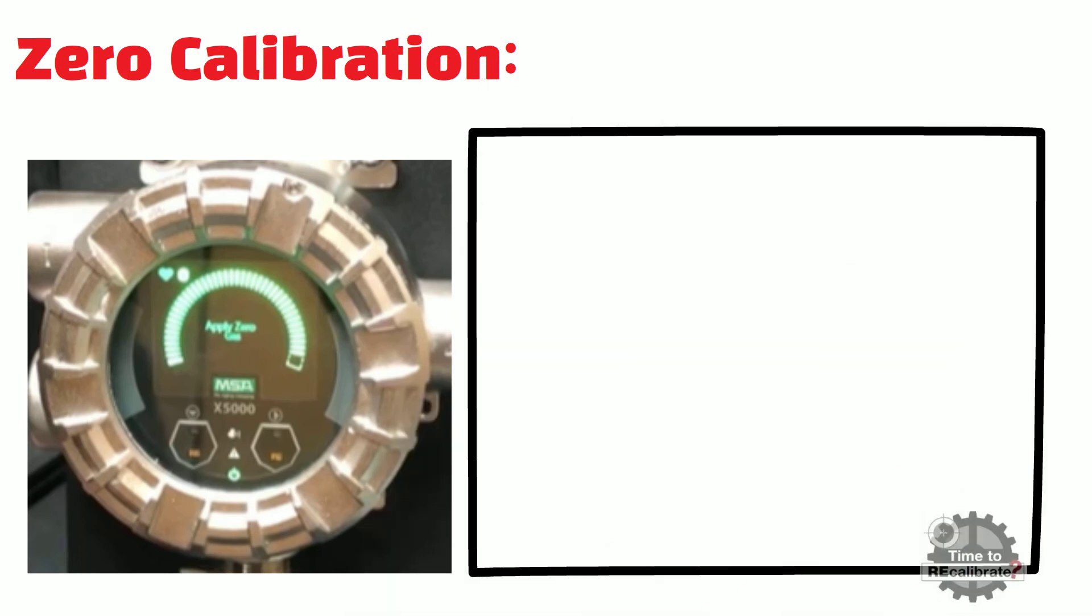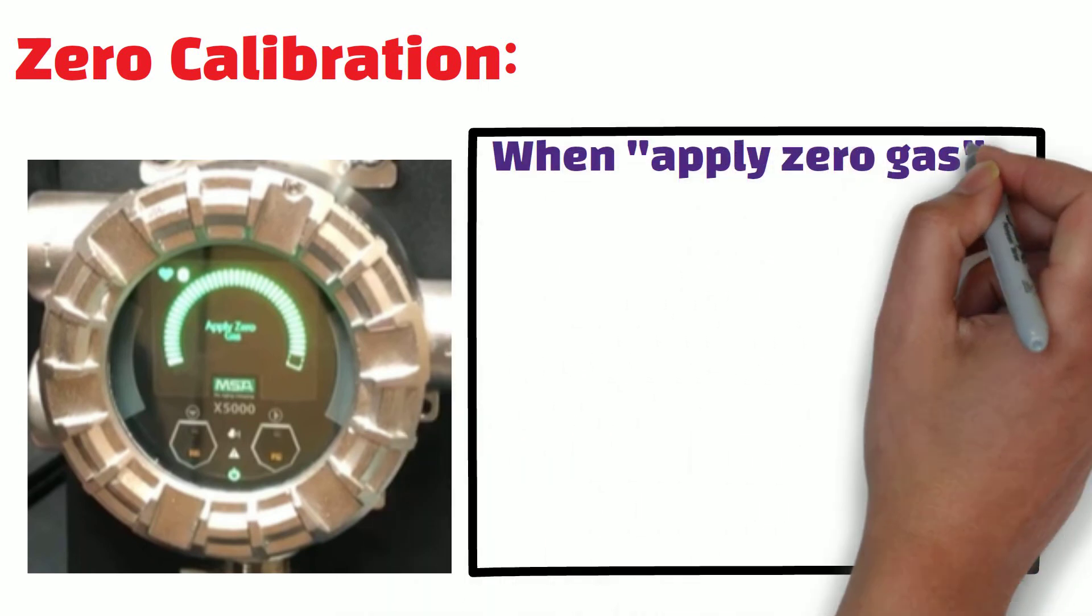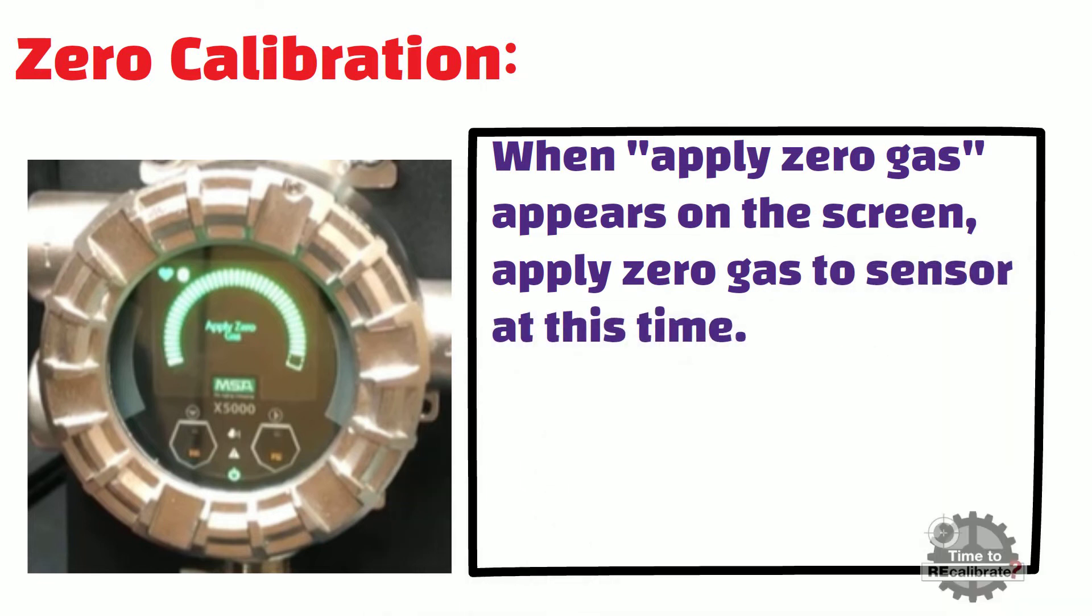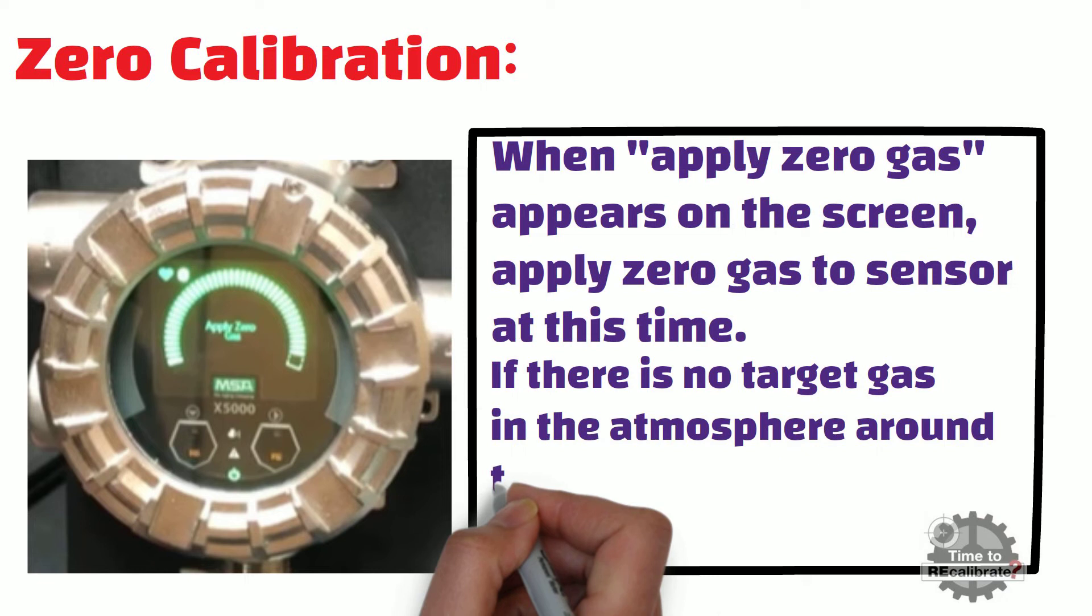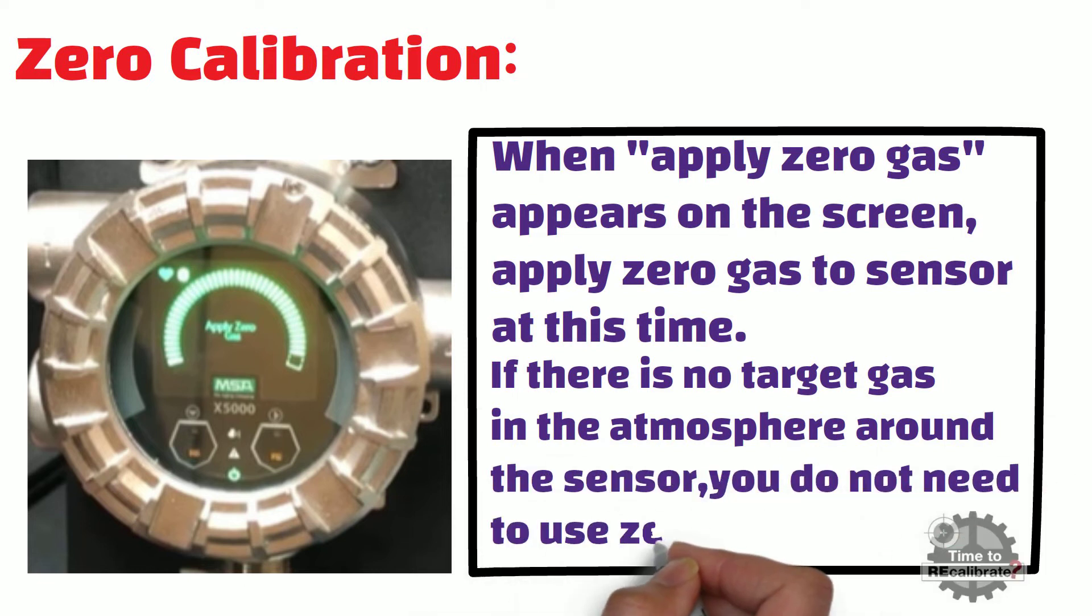When you see apply zero gas on the screen, apply the zero gas to the sensor. And if there is no target gas in the atmosphere around the sensor, you do not need to use zero gas in this case. Zero calibration will occur in open to air.